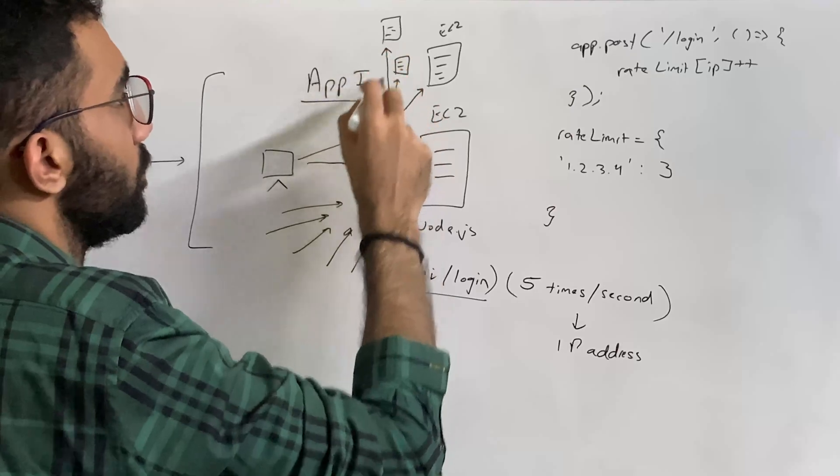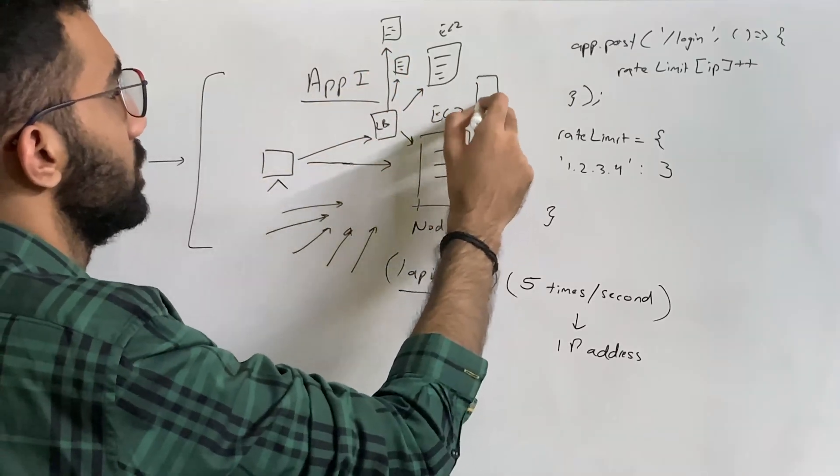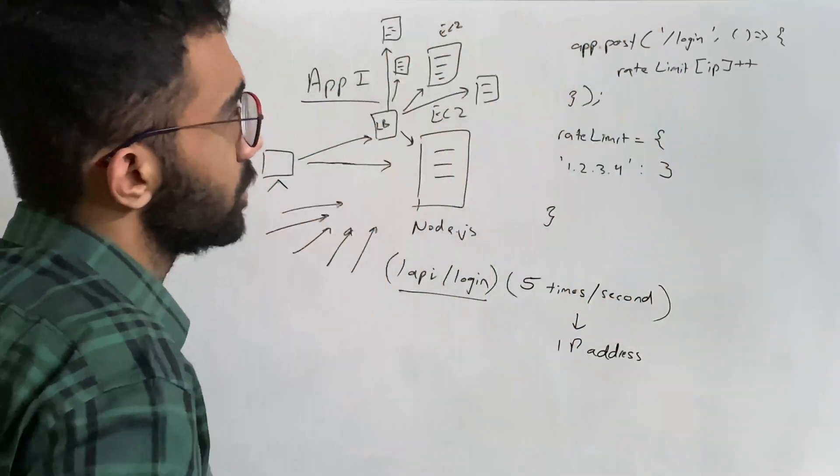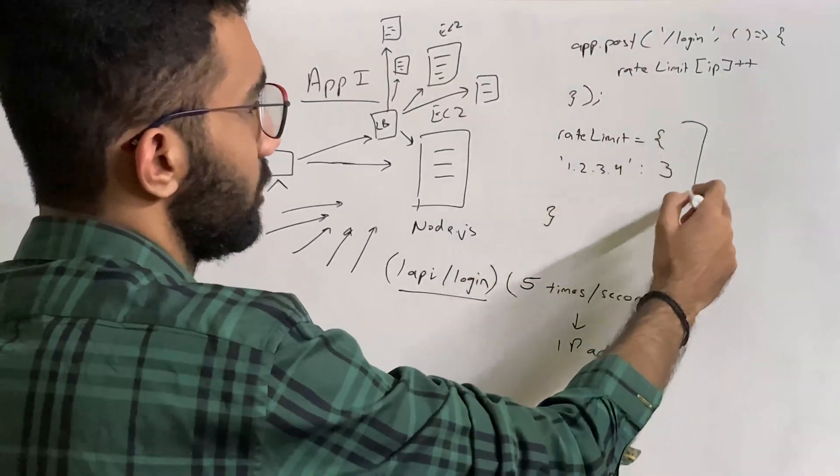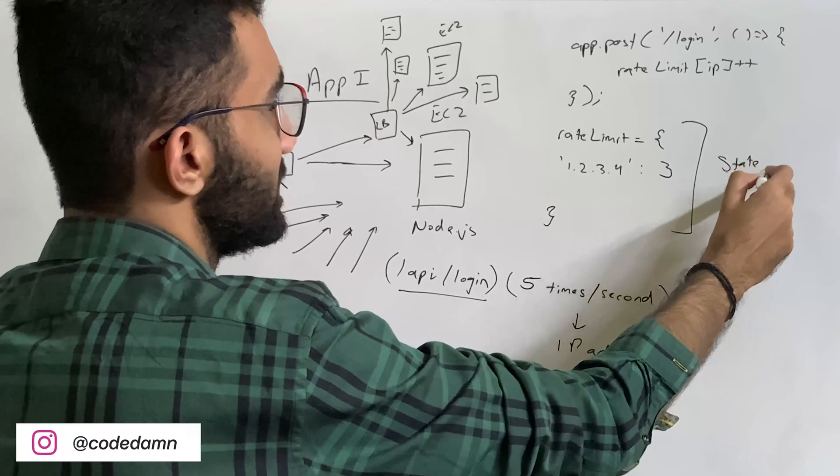Let's assume you are trying to win the world, and you have so many servers now. So this architecture fails over there, where you are storing this in the memory in the node memory itself. This right here is called state.